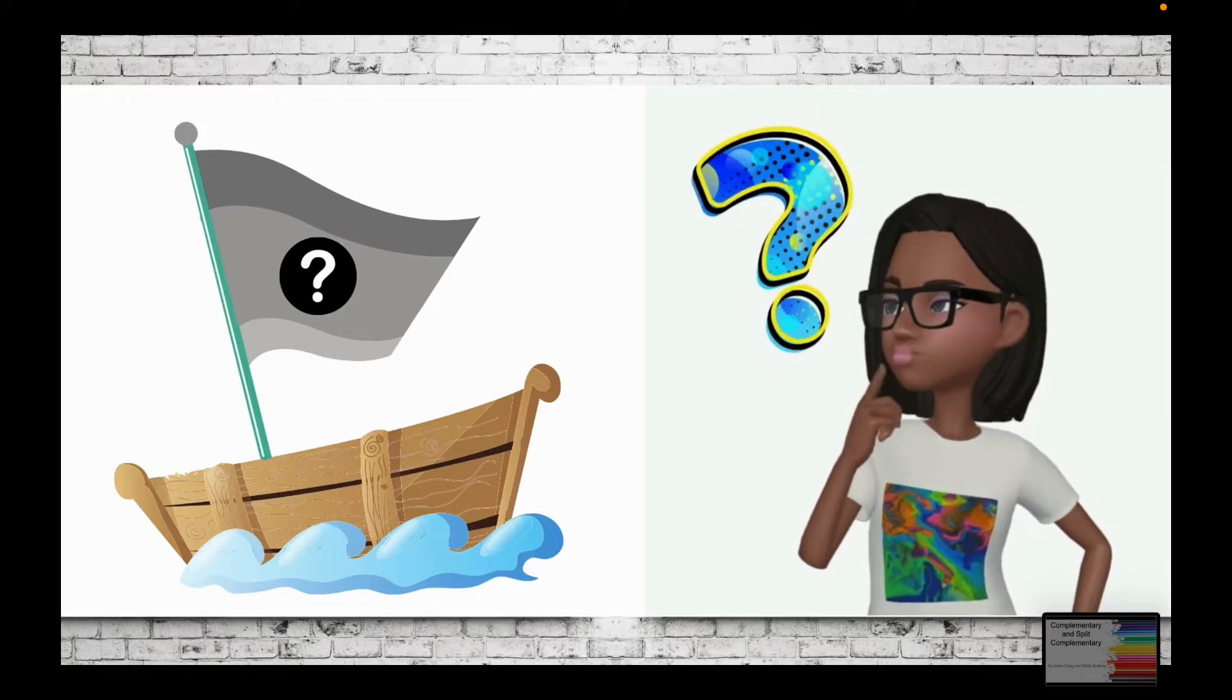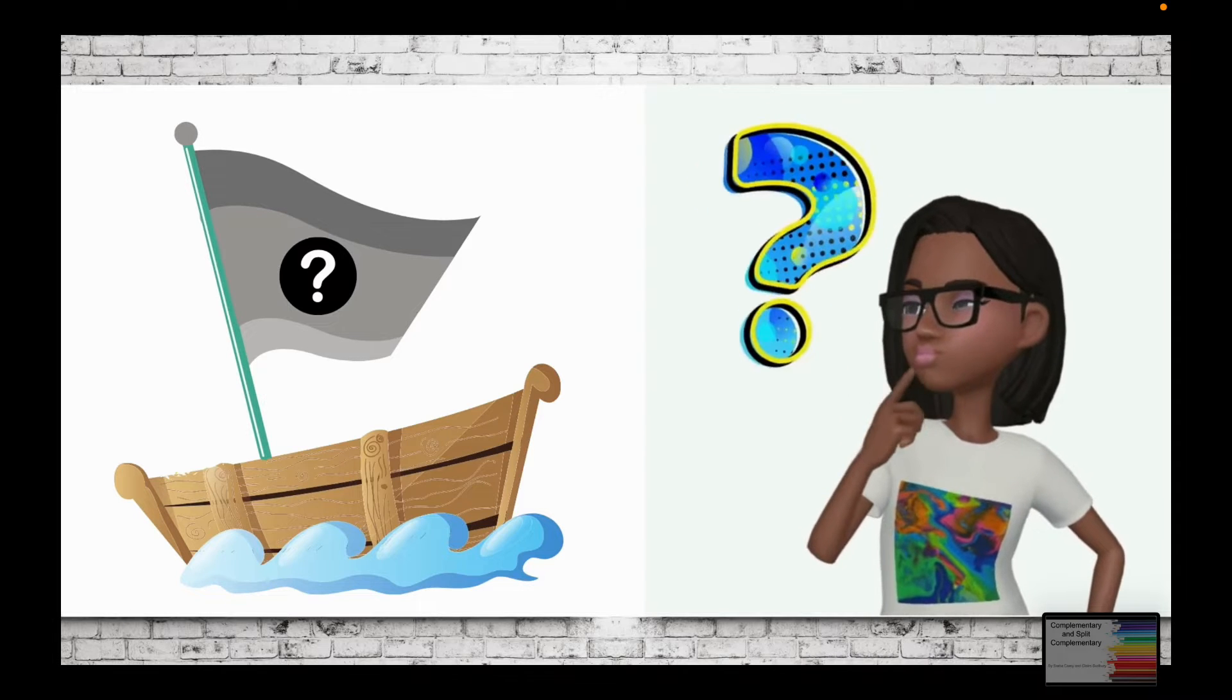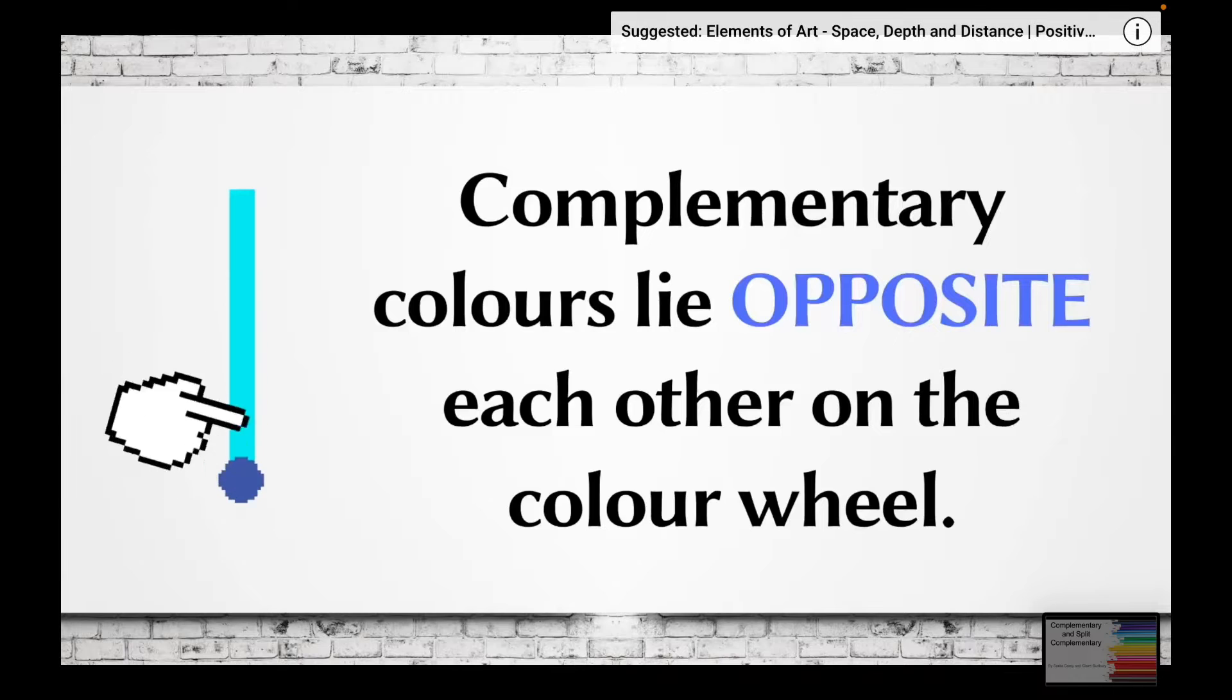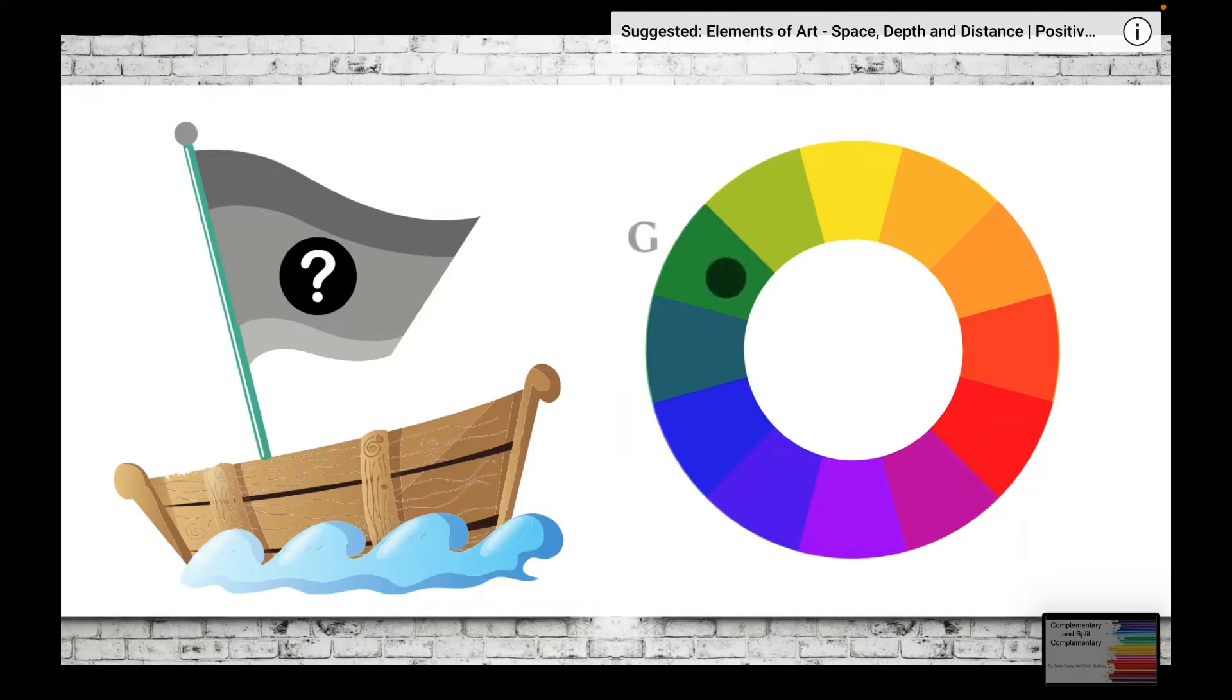Using a split complementary color scheme, what three colors can I use to design my flag? Let's recap a little. Complementary colors lie opposite each other on the color wheel.